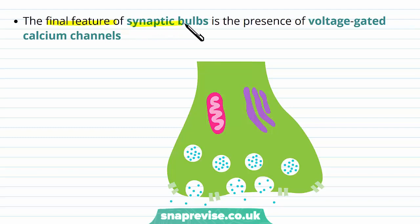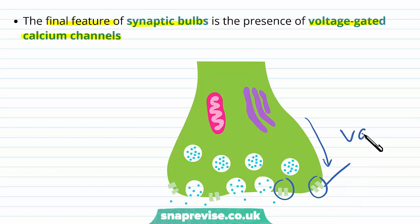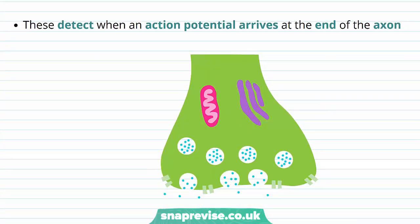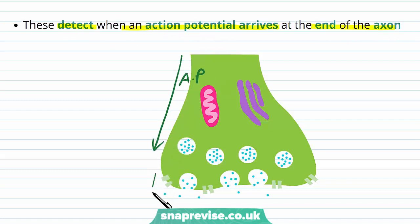The synaptic bulb also has voltage-gated calcium channels present in its membrane. Looking at the pre-synaptic bulb, we can see proteins embedded in the membrane — these are voltage-gated calcium channels carrying calcium ions, not sodium or potassium. Their purpose is to detect when an action potential arrives at the end of the axon, signalling that this message needs to get across the synapse.